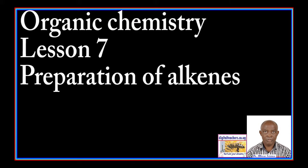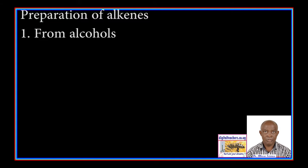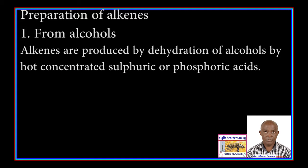Today we are going to study Organic Chemistry Lesson 7, Preparation of Alkenes — one from Alcohols. Alkenes are produced by dehydration of alcohols by hot concentrated sulfuric or phosphoric acids.